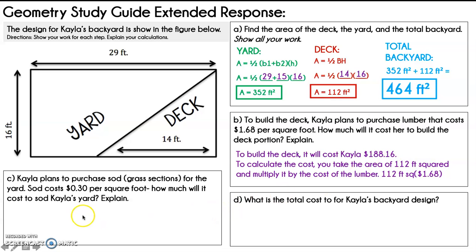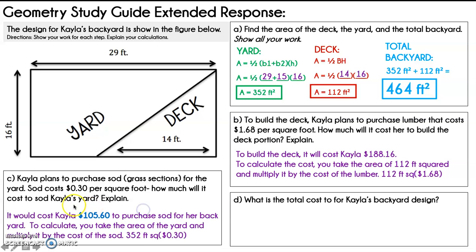Part C says, Kayla plans to purchase sod or grass sections for the yard and sod costs 30 cents per square foot. How much will it cost to sod Kayla's backyard? So now we're going to be working with the area of the yard. So that's 352 feet squared. First thing we're going to do is answer the question and restate. It would cost Kayla $105.60 to purchase sod for her backyard.